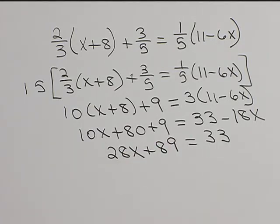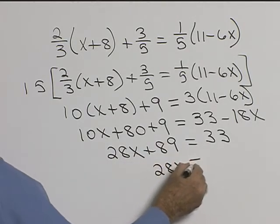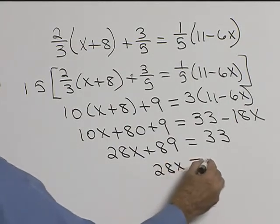Now we need to subtract 89 from both sides. If you subtract 89 from both sides, we'll be left with 28x. On the left hand side, 33 minus 89 will be negative 56.